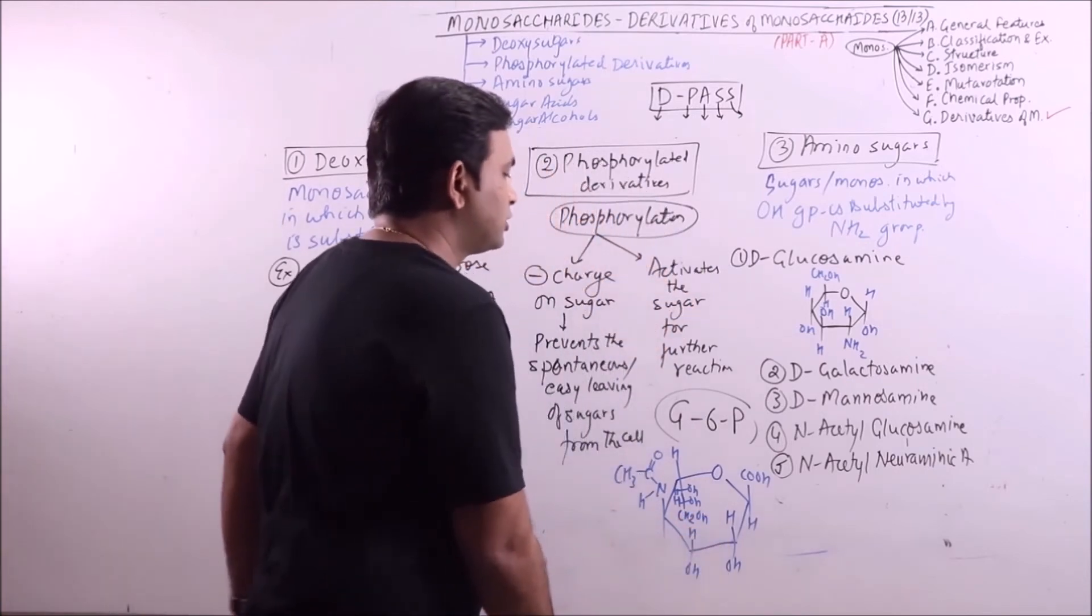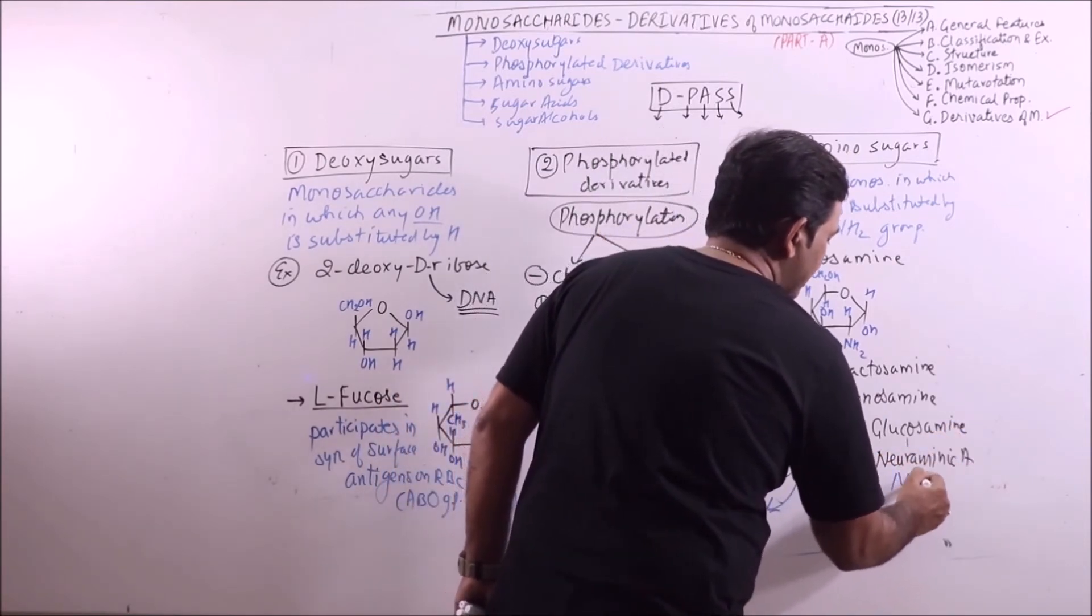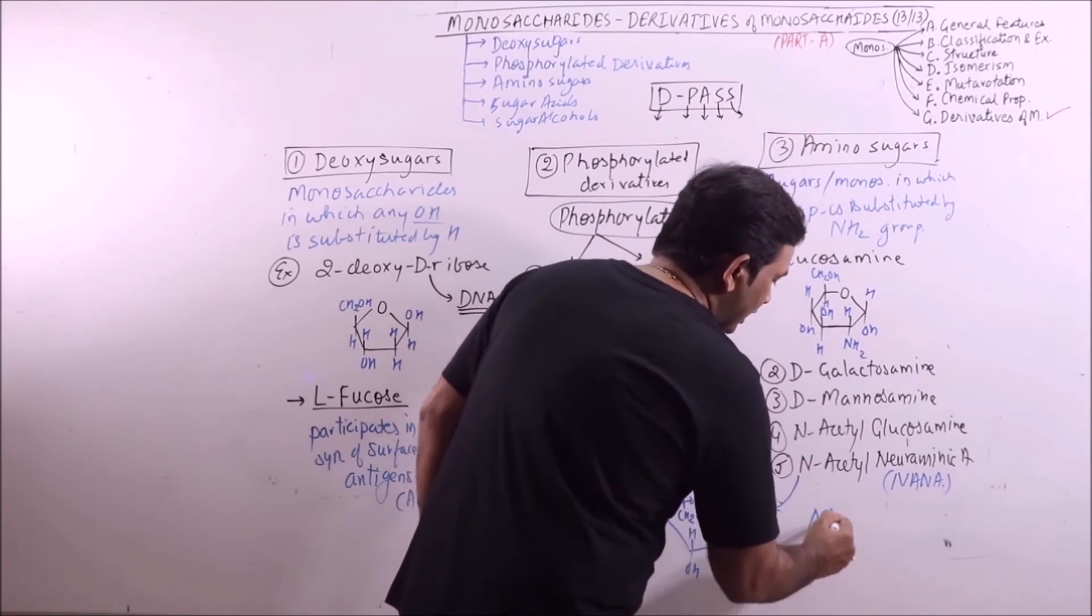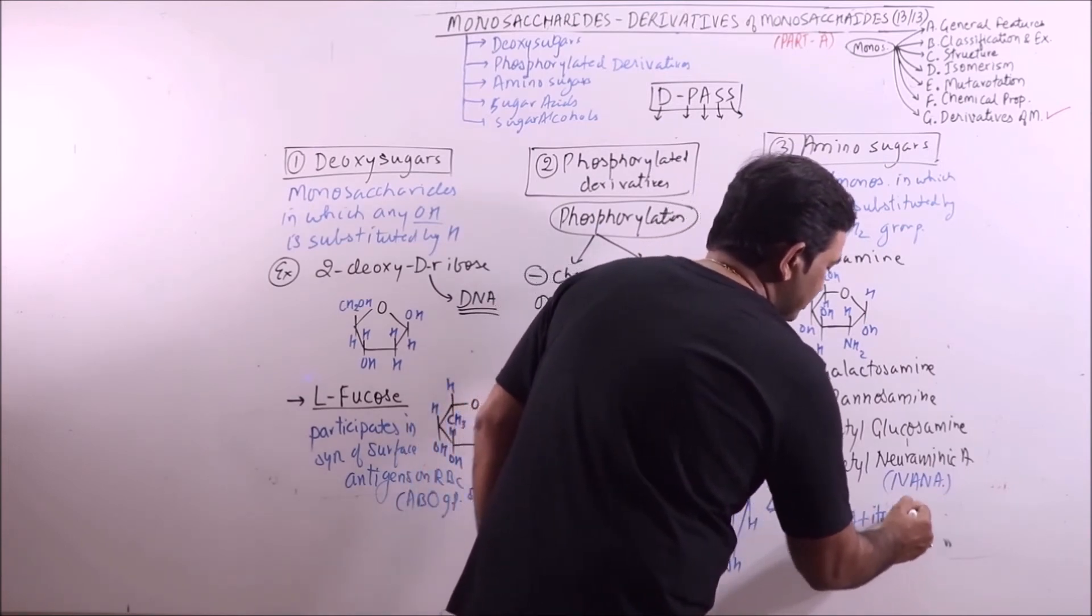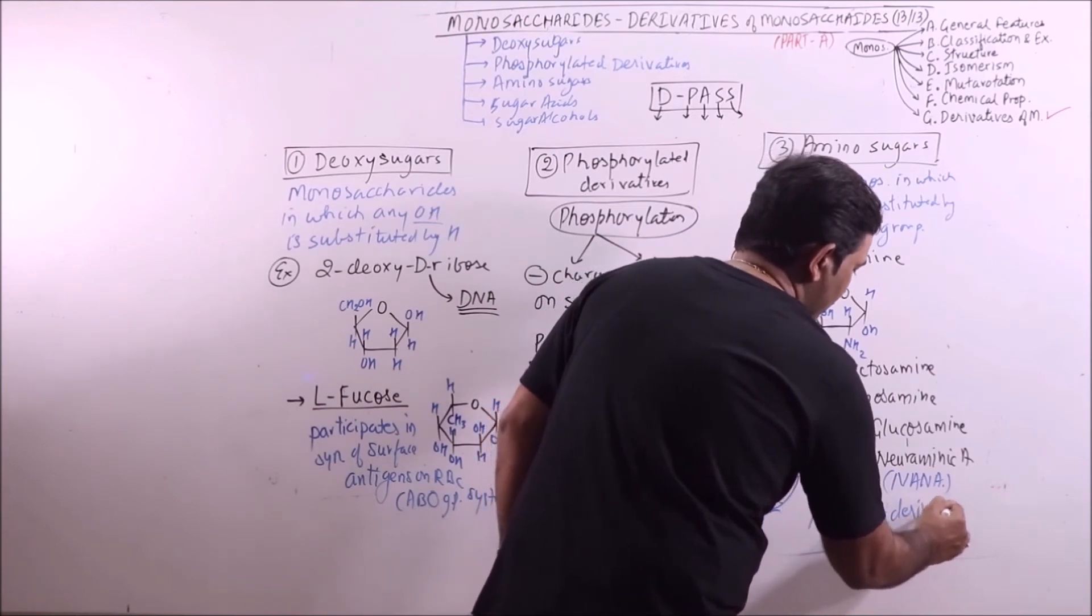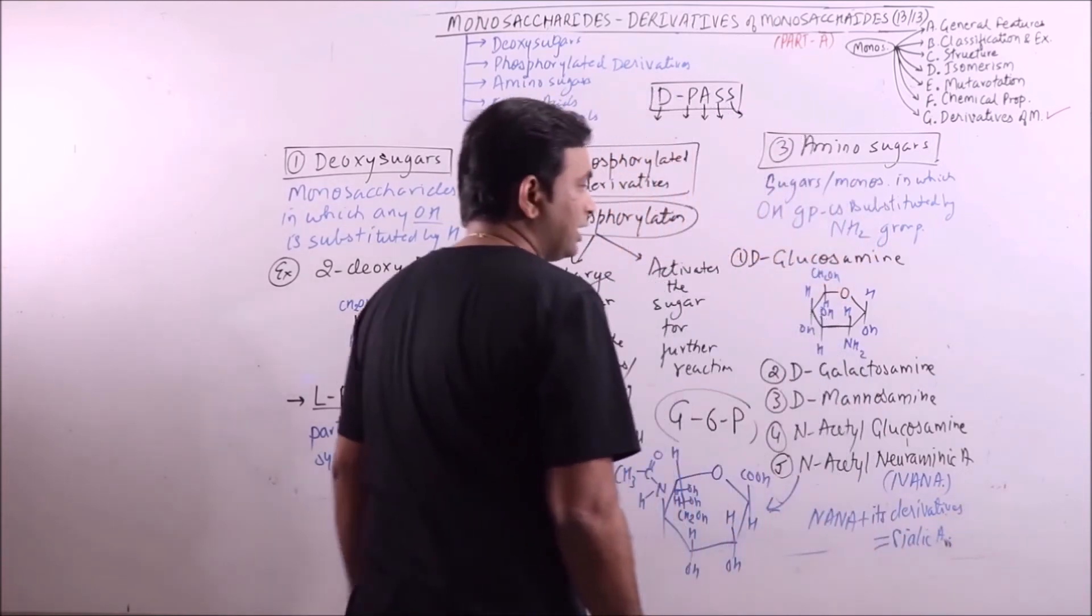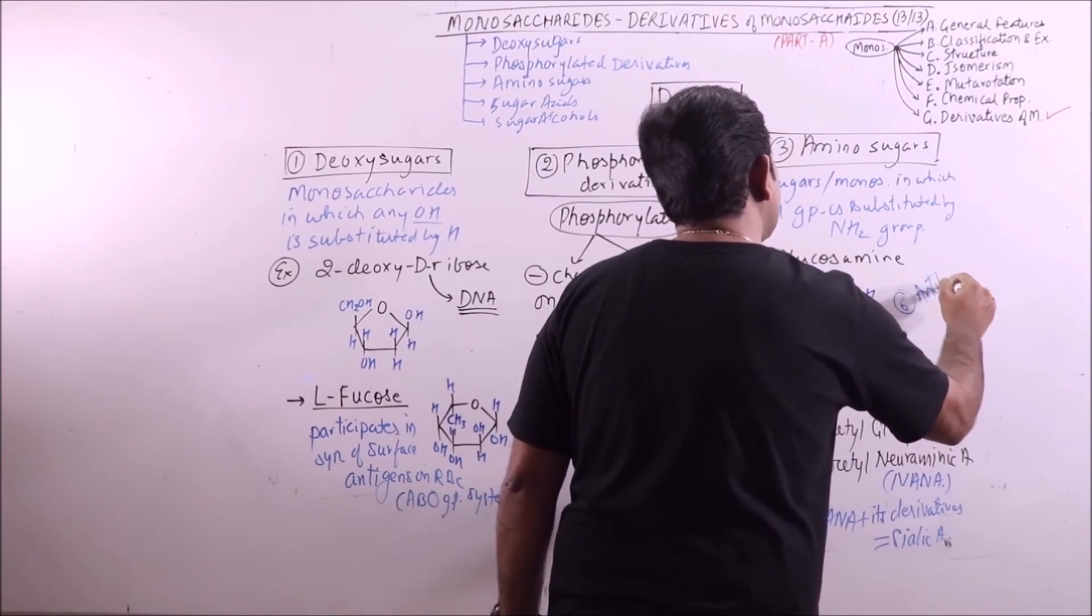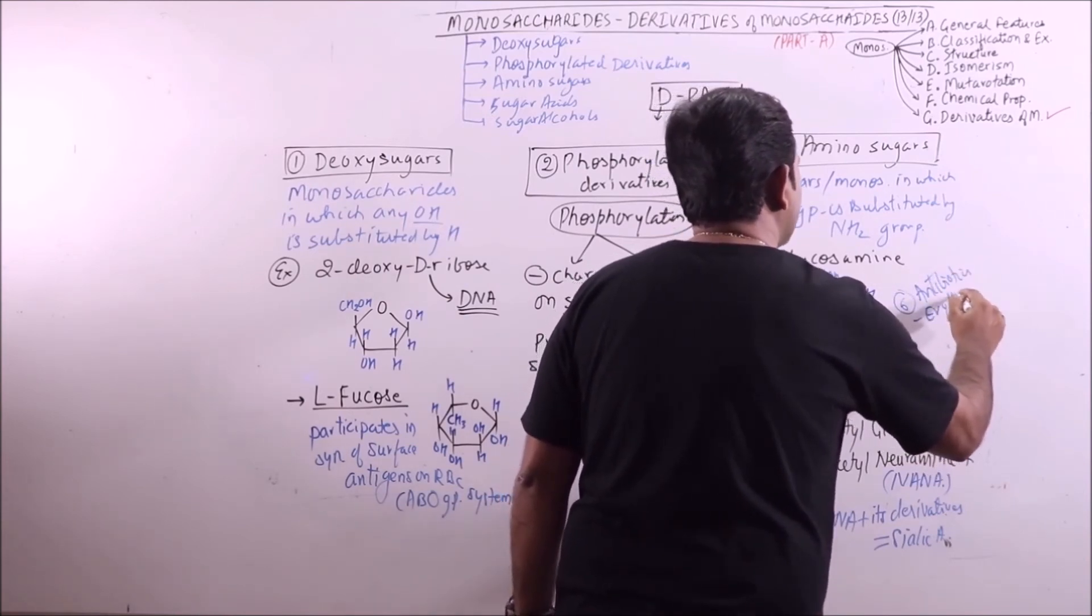So this is the structure of N-acetylneuraminic acid. N-acetylneuraminic acid plus its derivatives are collectively termed as sialic acid. In addition, we can also add some antibiotics like erythromycin.